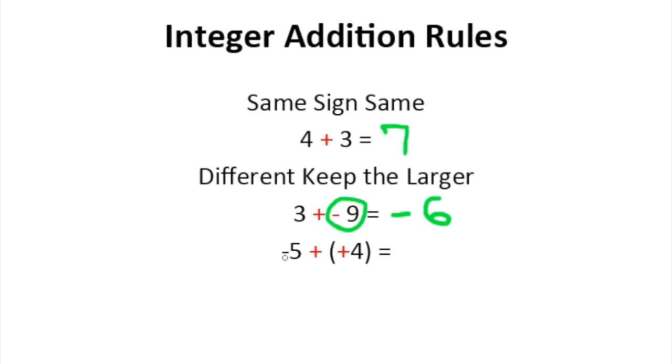And last one, we have a negative 5 plus a positive 4. So we're going to, once again, since there are different signs, keep the larger. 5 is the larger number, which is negative. So our answer will be negative. Then we can find the difference between the two. 5 minus 4 leaves us with 1. So the solution would be negative 1.